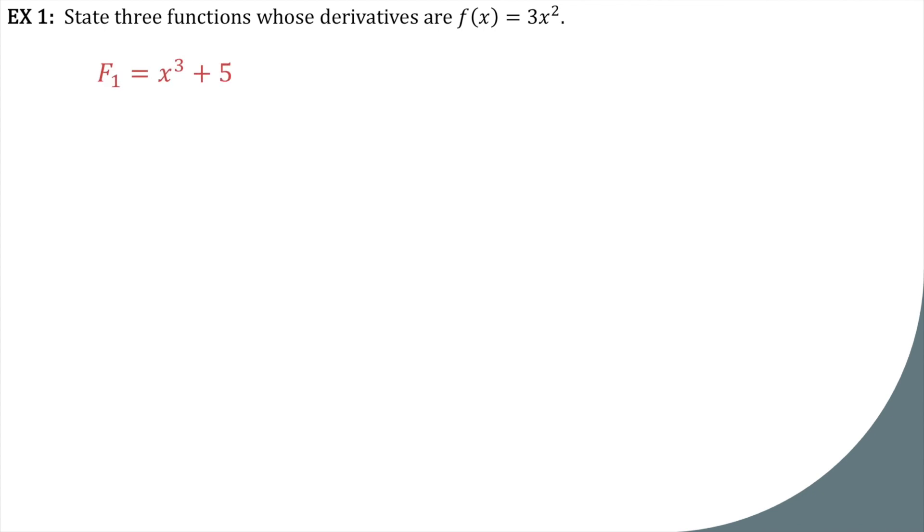What about x to the third plus 5? You bring that 3 forward, and then it's 3x squared, and then the 5 just goes away. So yeah, x to the third plus 5 would work. What about x to the third plus 3? Same thing, you'd still get a derivative of 3x squared.